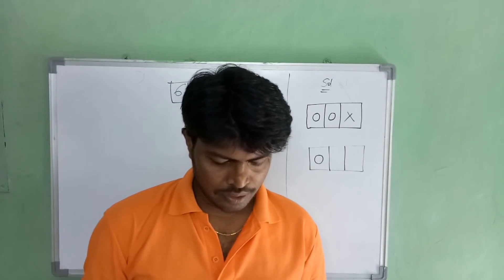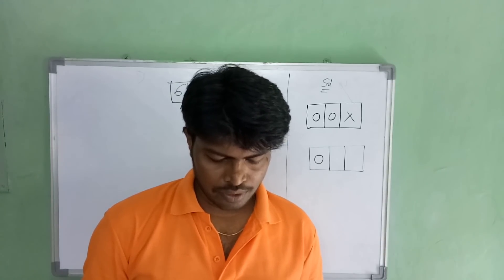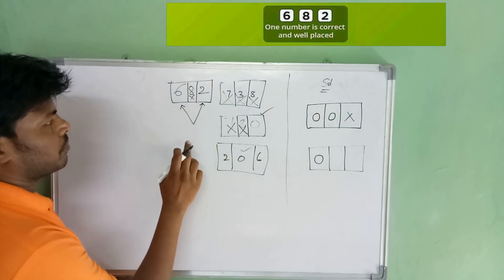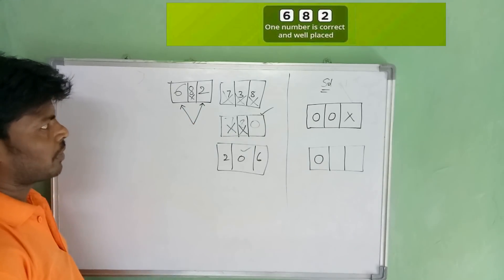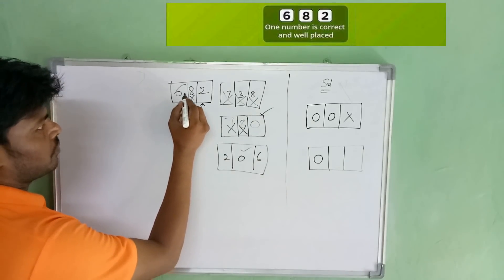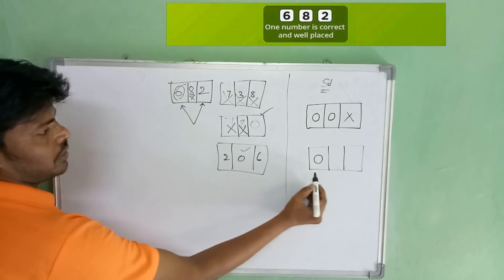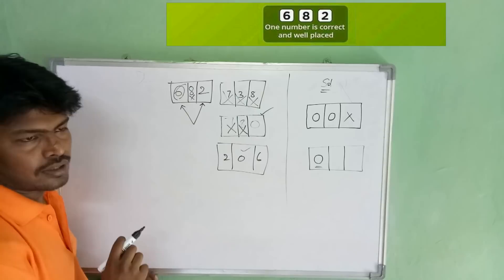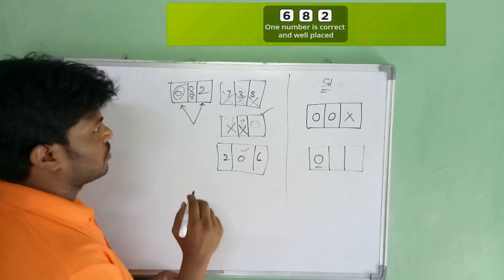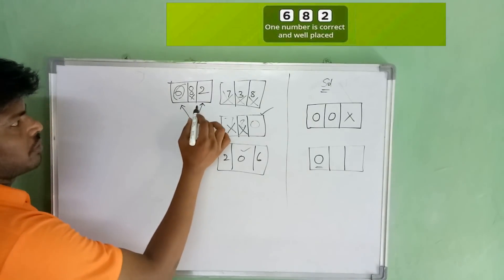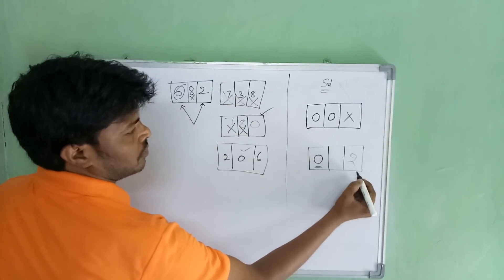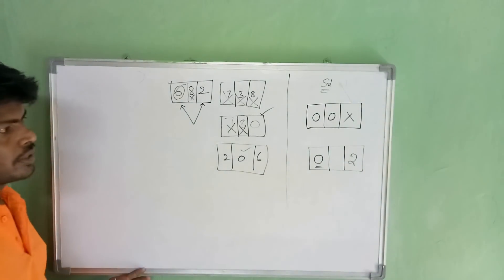Looking at figure 6-8-2 again, it says one number is correct and well placed. If 6 is correct and well placed, the position of that place is already taken by zero. So 6 is not the number. By elimination, therefore, the one number that is correct and well placed is 2 — the number 2 is correct and well placed.